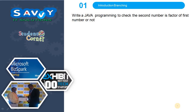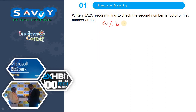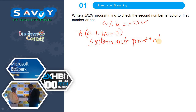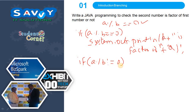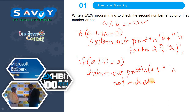The next program: write a Java program to check if the second number is a factor of the first number or not. A is the first number and B is the second number. If the remainder is 0 then it is called a factor, otherwise not a factor. So if a mod b is equal to 0, we print system.out.println b is factor of a. Again we check: if a mod b is not equal to 0, we print b is not a factor of a. That is exactly the concept.